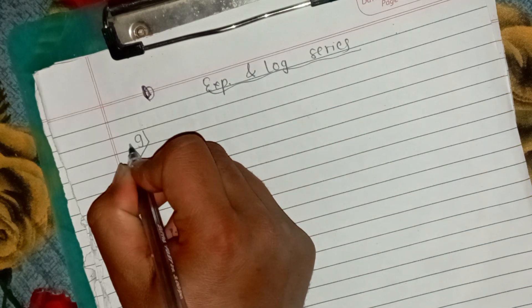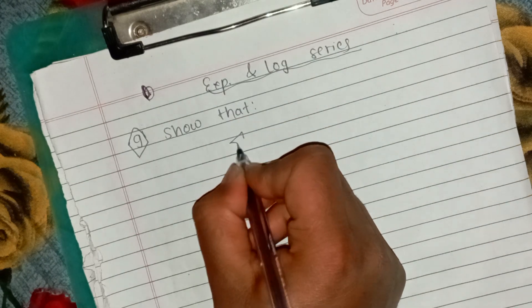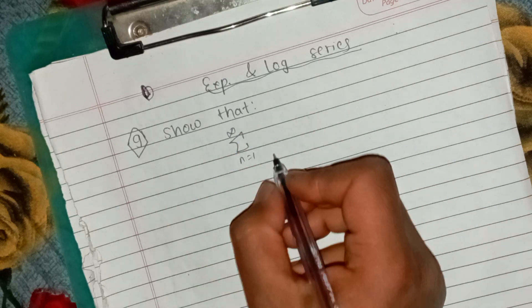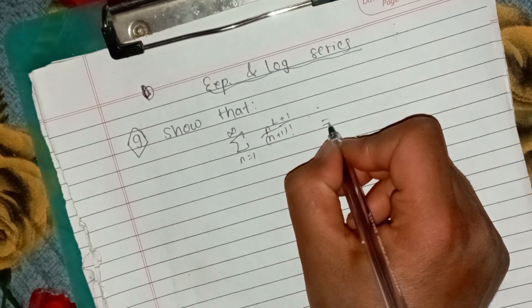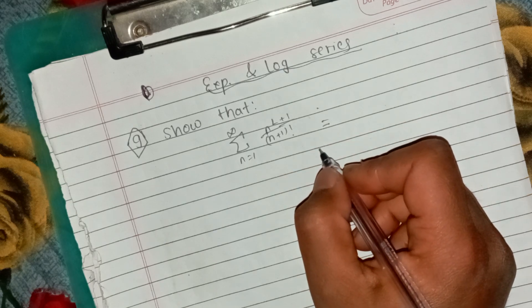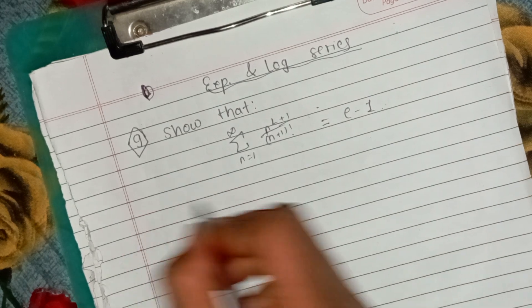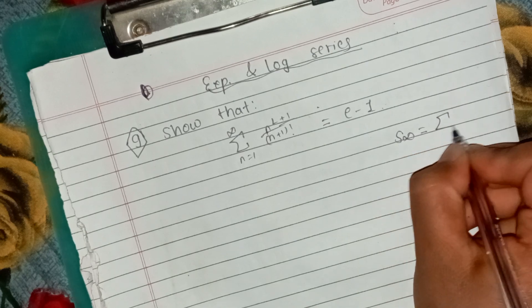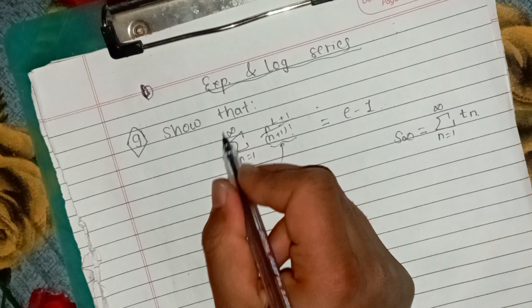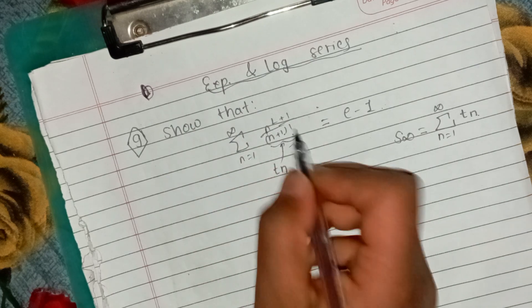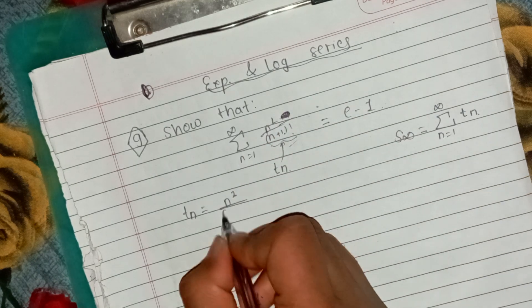I am going to look at this problem. The question is: n squared plus 1 by n plus 1 factorial. We have to prove this one. We will write the sum up to infinity. Summation of n equals 1 to infinity of Tn. The nth term is equal to Tn, which is n squared by n plus 1 factorial.